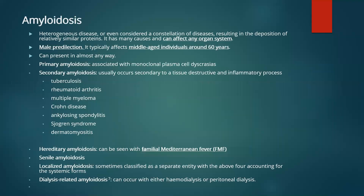I'm going to briefly discuss amyloidosis. This is a heterogeneous disease — some even consider it a constellation of diseases. It can affect any organ system. Amyloidosis has a male predilection and mostly affects middle-aged individuals. It can present in almost any way because it affects almost every system.